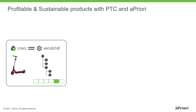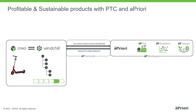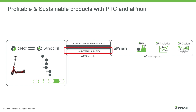It begins with connecting the two platforms through AP Generate. Windchill provides the digital twin with 3D CAD, basic production parameters and PMI if available. AP Generate then analyses parts or entire bills of material to generate many manufacturing insights.